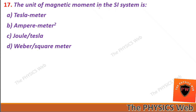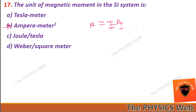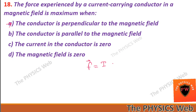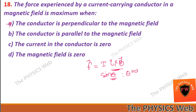Next, question seventeen: the unit of magnetic moment in the SI system is Ampere·meter². So B is your correct option, because magnetic moment is defined as I times A (Ampere·meter²). Question eighteen: the force experienced by a current-carrying conductor in a magnetic field is maximum when the conductor is perpendicular to the magnetic field. So A is your correct option, because the force is given by I(L × B), and since it is a cross product, it gives sin θ, which is maximum when θ equals 90 degrees.